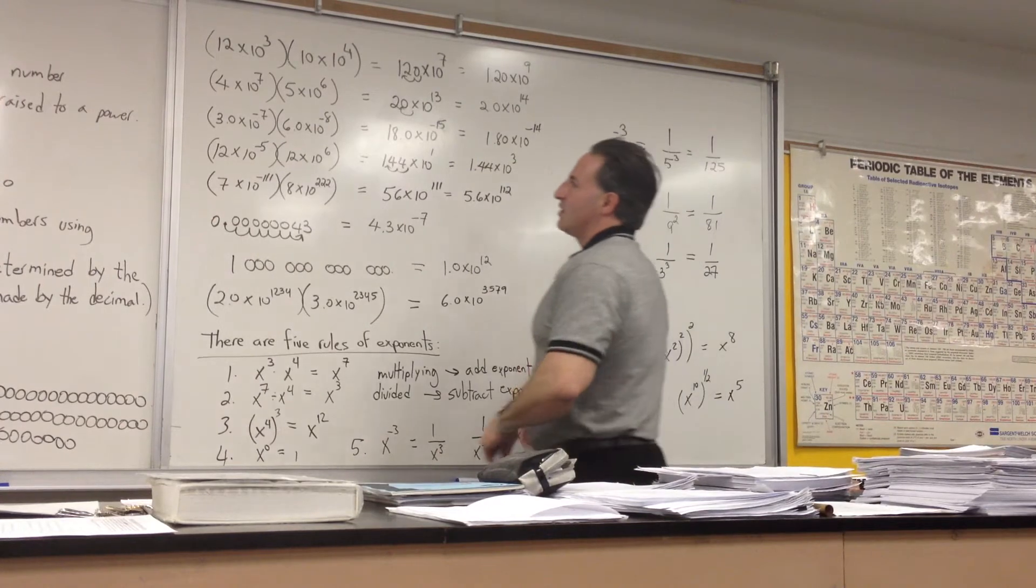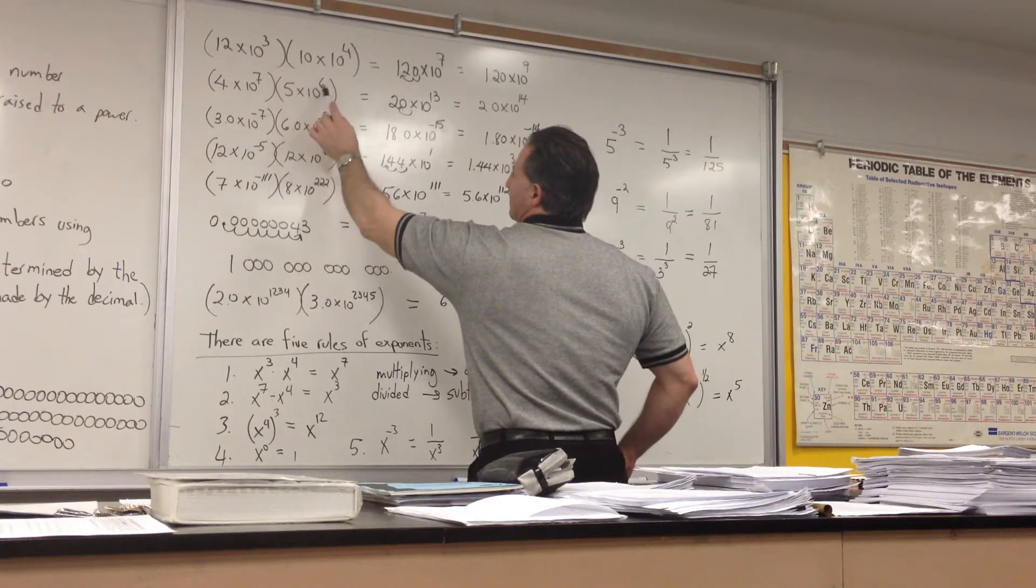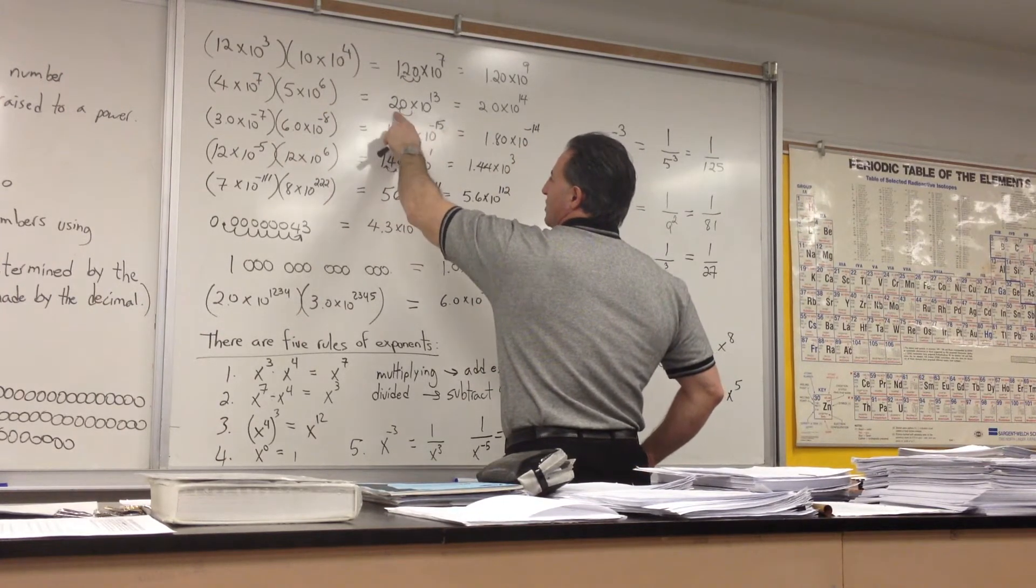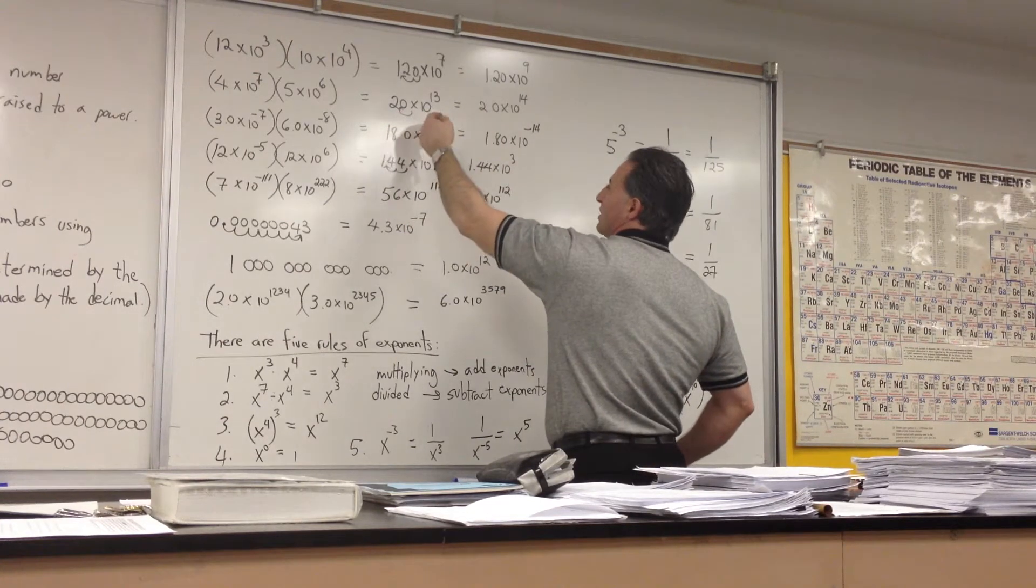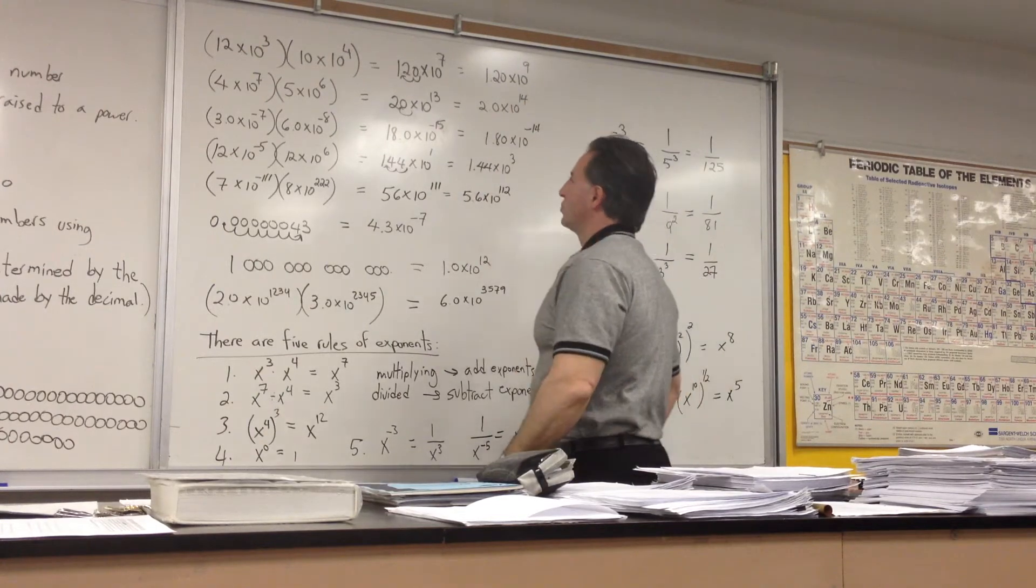Likewise, 4 times 10 to the 7 times 5 times 10 to the 6 is 4 times 5, which gives you 20. 10 to the 7 times 10 to the 6 gives you 10 to the 13. And for the 20, we move the decimal over by 1 to get 2.0. And then because we move the decimal over to the left, we raise the exponent by 1. So we get 10 to the 14.